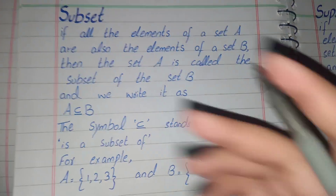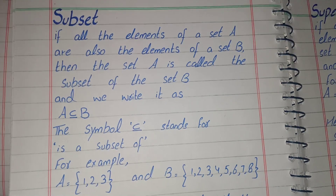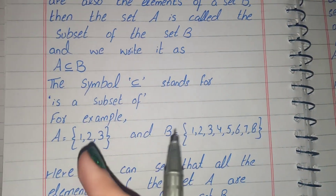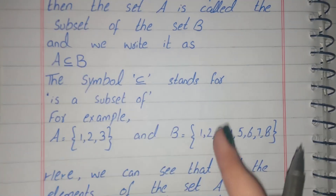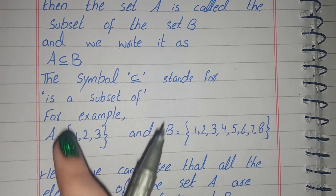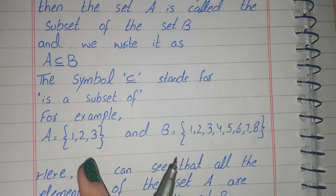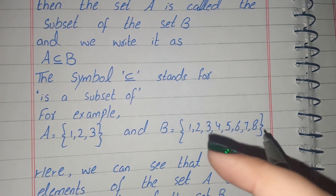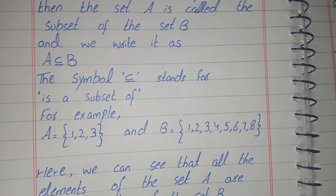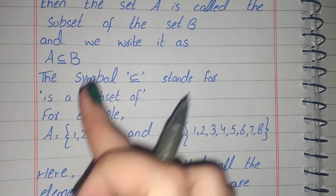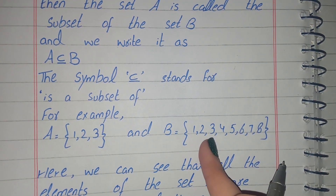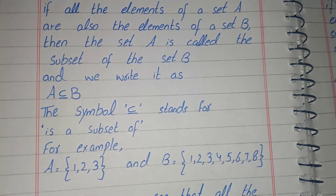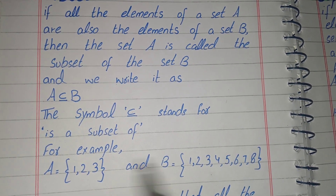The concept of subset is that if all the elements of set A are also the elements of set B, then we will say A is a subset of set B. You can see that elements of set A are 1, 2, 3 and the elements of set B are 1, 2, 3, 4, 5, 6, 7, 8. So all the elements of set A are also the elements of set B, therefore set A is a subset of set B.